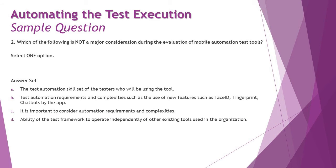Question number two: which of the following is not a major consideration during the evaluation of mobile automation test tools? You have a list of considerations from the foundation level plus some added here. Option A: the test automation skill set of the tester who will be using the tool. That's an important consideration because the tester needs to be aware of the tool and whether they will be able to adapt to it and get started, since you can't give a completely new tool and expect immediate productivity.